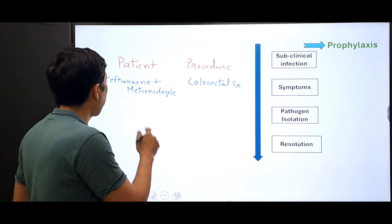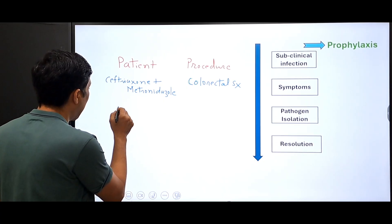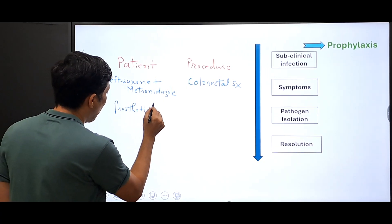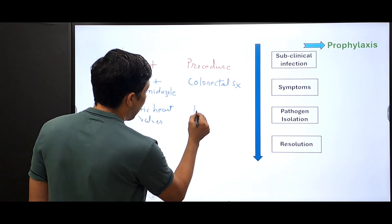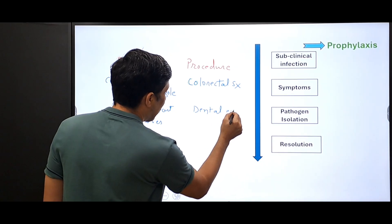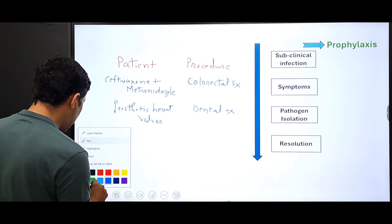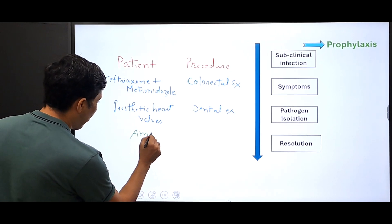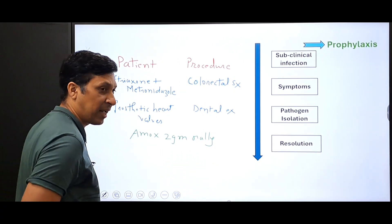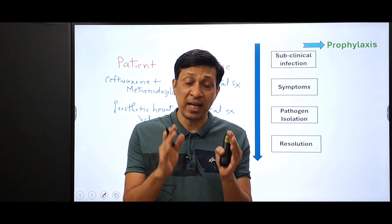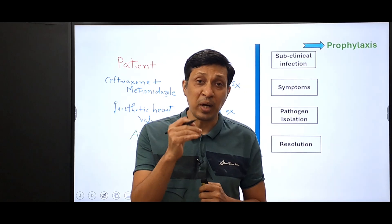Sometimes the patient is a riskier patient and the procedure is easy. For example, if there is a patient having prosthetic heart valves and this patient is going for a dental extraction, we give a prophylaxis of amoxicillin 2 grams orally about one hour before dental extraction. So in prophylaxis, we anticipate that there can be an infection and we give antibiotics.